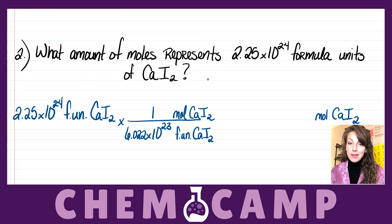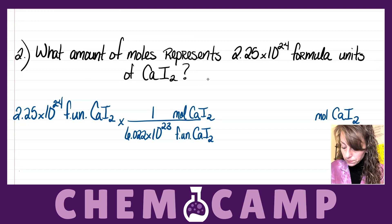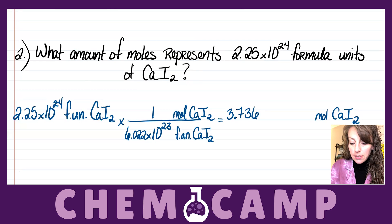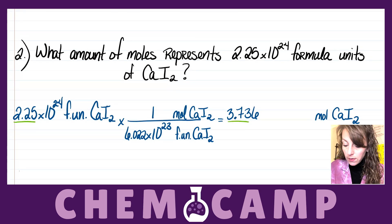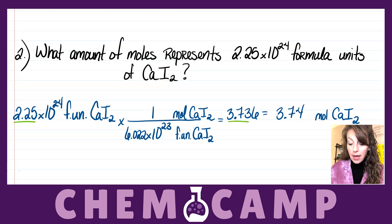Since that large number is on the bottom, we divide: 2.25×10²⁴ divided by 6.022×10²³ gives 3.736. Checking sig figs — we have three sig figs in our given — so the final answer is 3.74 moles of CaI₂.